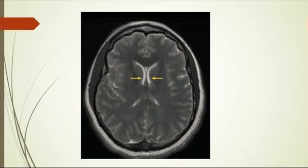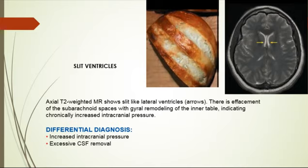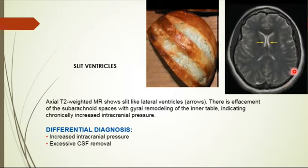The ventricle is slit-like — very small and thin. This appearance can be seen with increased intracranial pressure and excessive CSF removal. There are slit-like ventricles with effacement of the subarachnoid space and gyral remodeling of the inner table. The subarachnoid space is not well seen, indicating chronically increased intracranial pressure.